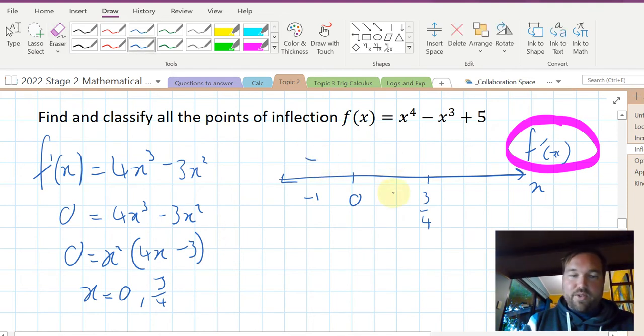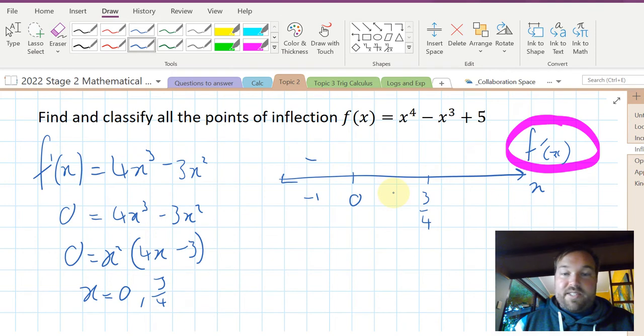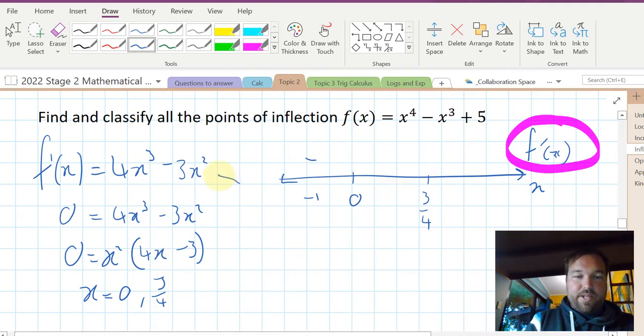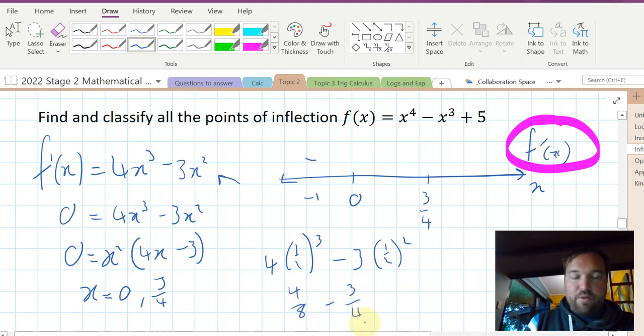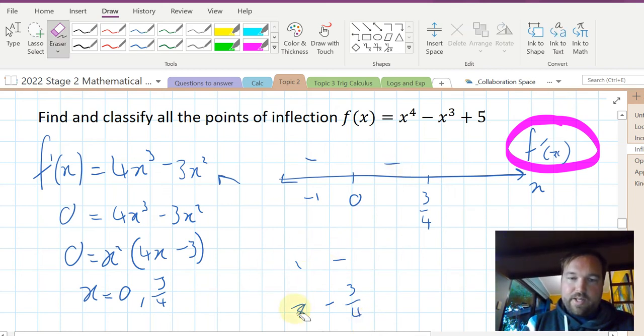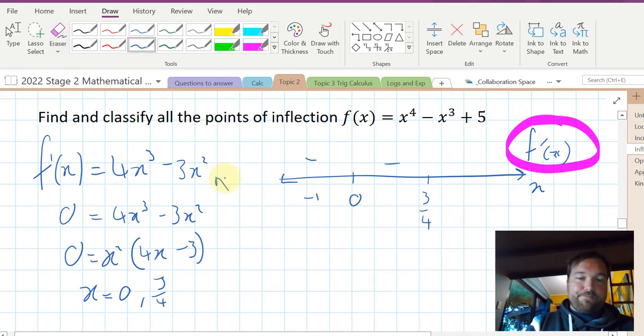You're finding the sign diagram of the first derivative, so the substitution must go into the first derivative. If we put minus one, I'm going to put it into the factorized form. Minus one squared is just positive one, times 4 times minus 1 minus 3 is minus 7. So this is going to be negative because one times minus seven is negative. Then we put in a value between the two, probably a half. Four lots of a half cubed minus three lots of a half squared, that's four on eight minus three on four. It's going to work out to be negative as well. Lastly, we choose a value above three quarters. If you put in one, four minus three is positive.